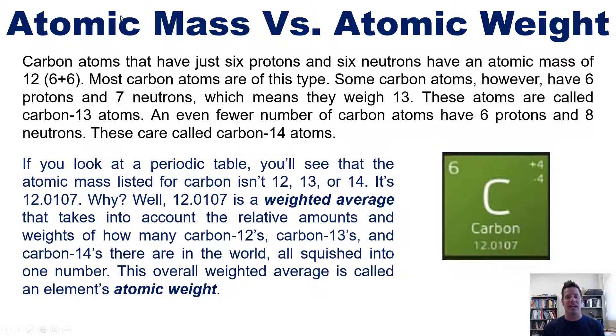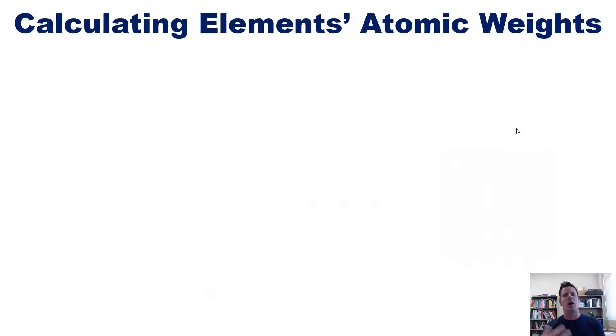This overall weighted average is called the element's atomic weight. We would say that a carbon 12's atomic mass is exactly 12, a carbon 13's atomic mass is exactly 13, but carbon as an element has an atomic weight of 12.0107, which again is a weighted average that takes into account all these different isotope masses along with their percentages.